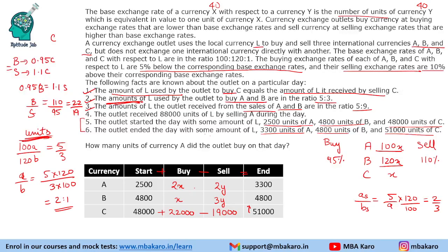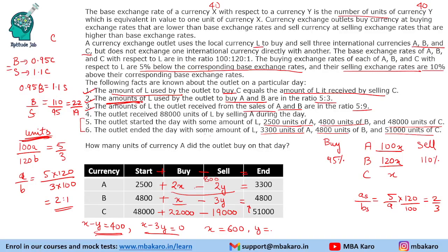Now we solve for x and y. For currency A: 2500 + 2x − 2y = 3300, so 2x − 2y = 800, giving x − y = 400. For currency B: 4800 + x − 3y = 4800, so x − 3y = 0. Solving these two equations: x = 600, y = 200. So units of A bought = 1200, units of A sold = 400, units of B bought = 600, units of B sold = 600. All conditions check out.